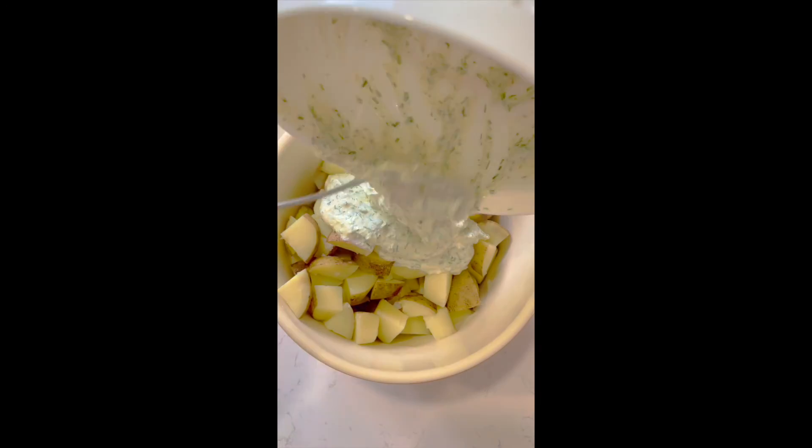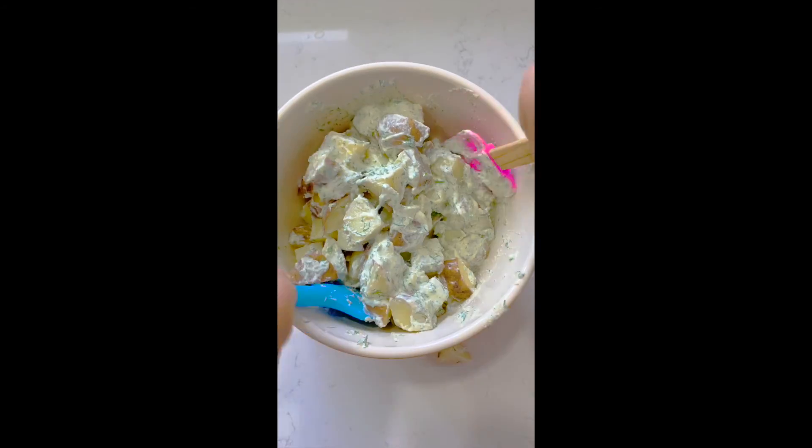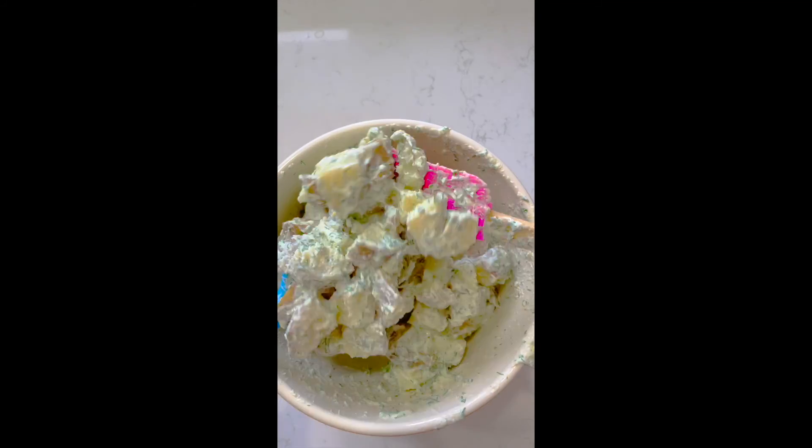Once they're cooled, add them to a large bowl, top it with all the dressing and toss to coat. I like to use silicone spatulas for this to not break up the potatoes, so just be gentle and make sure they're coated evenly.